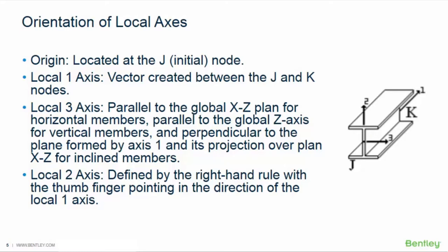Finally, your local two axis is defined by the right-hand rule with the thumb and forefinger pointing in the direction of the local one axis. The direction of the local two and three axes may be modified from the default values by manually entering values into the data panel or by using the local axis generation tools available in the spreadsheet tab of the ribbon. It's also important to note that the local axis of members must be clearly understood in order to interpret the analysis results for each member.